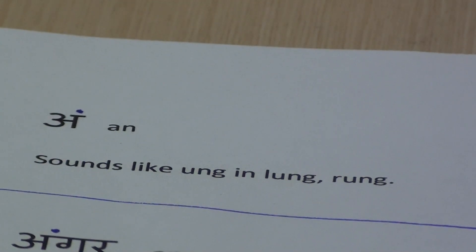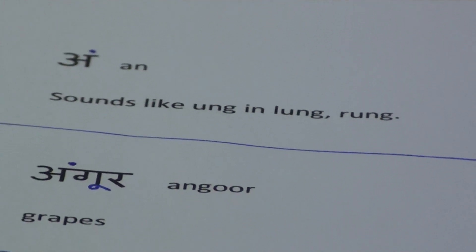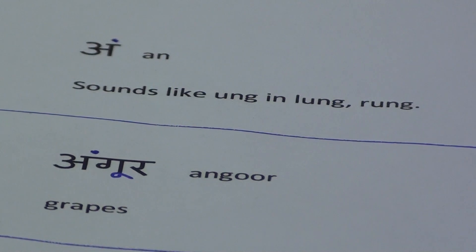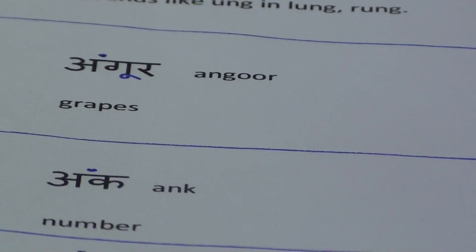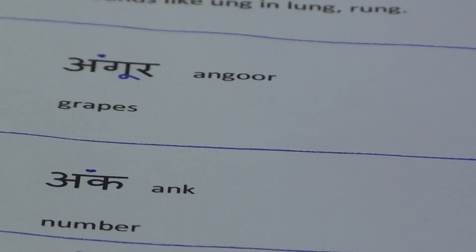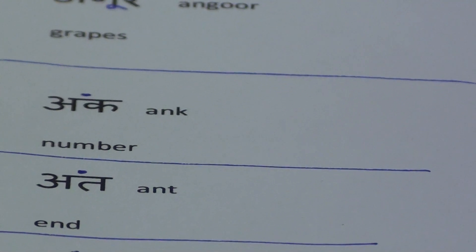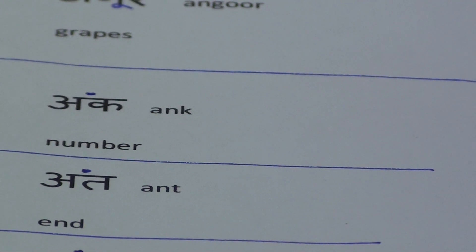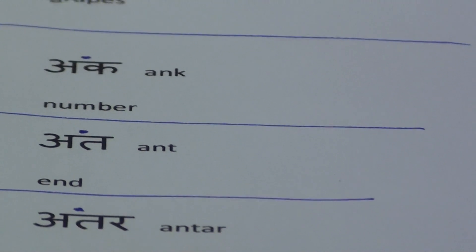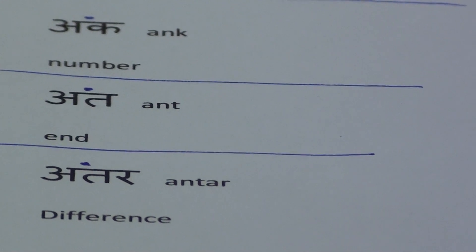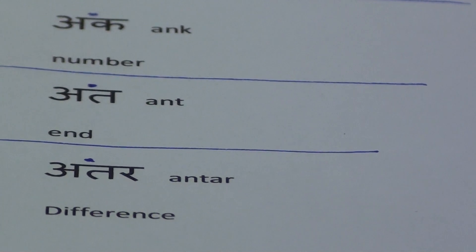Angoor means grapes. Ang means number. Ant means end. Antar means difference.